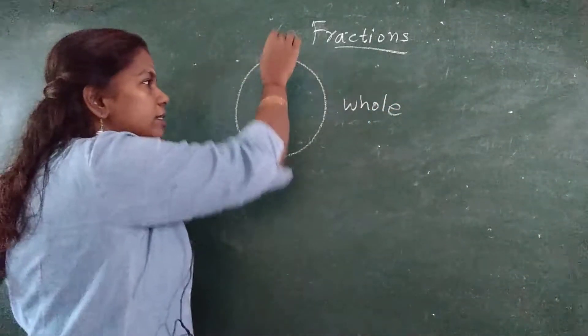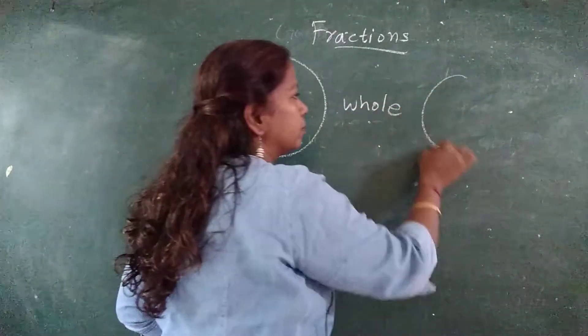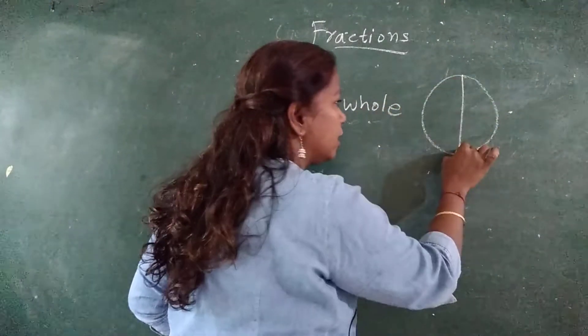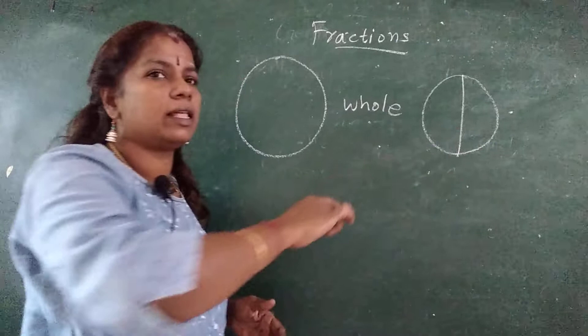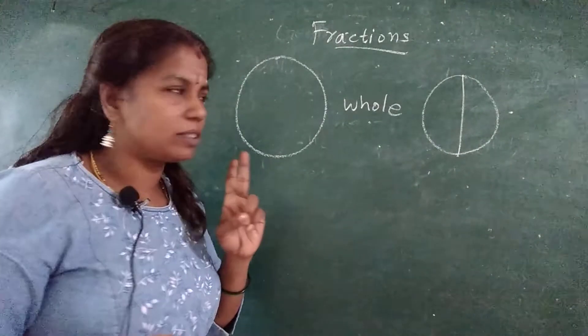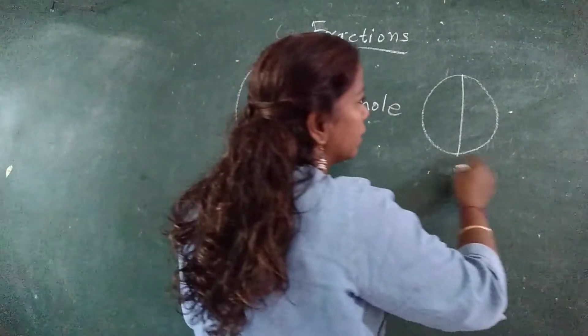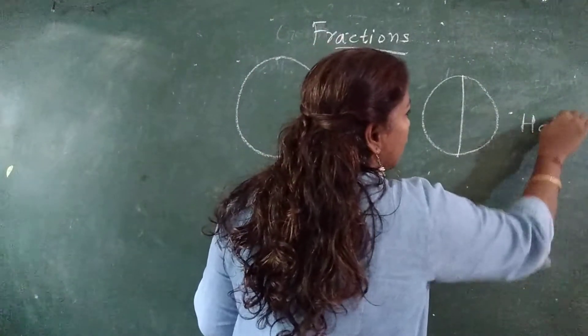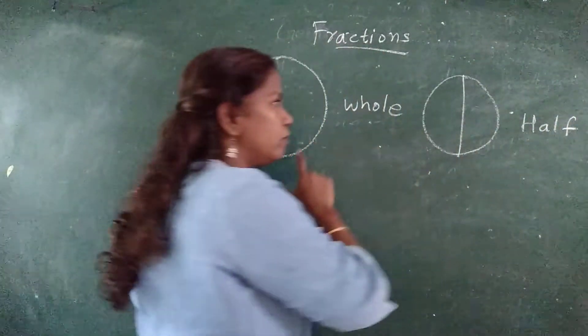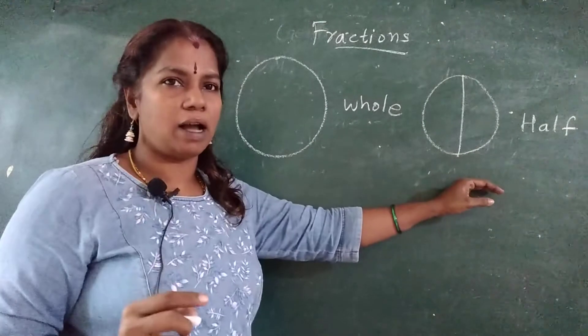Now in the same whole, if I am dividing into two parts. This same whole I have divided into how many parts? Two parts. That becomes half. This whole will become half.